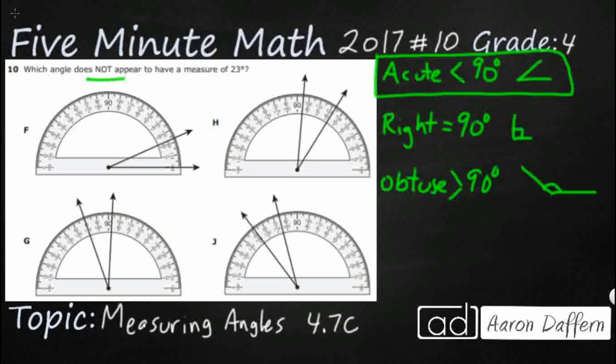So we're looking for something that does not measure 23 degrees. Three of these do have a measure of 23 degrees. They all look acute. I don't see anything that looks like it's larger than 90. So we're just going to look at all of the measurements here.